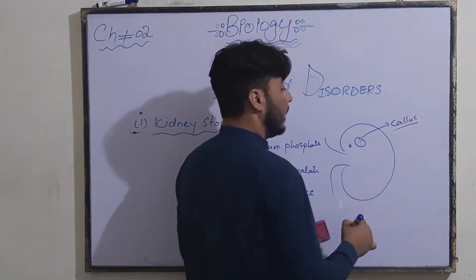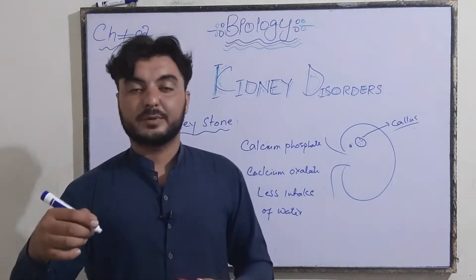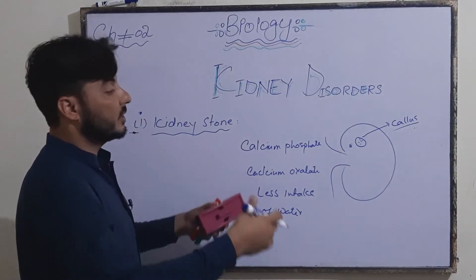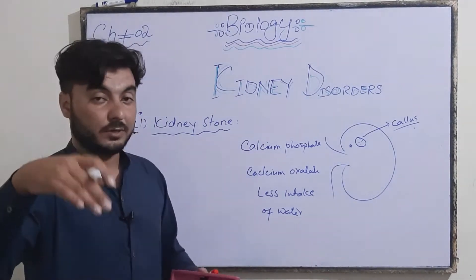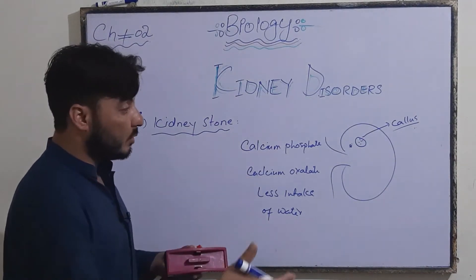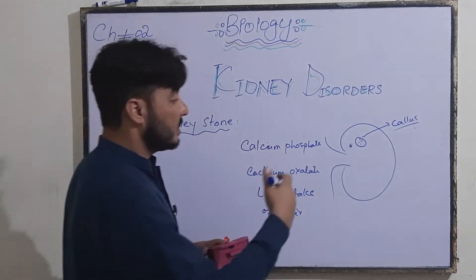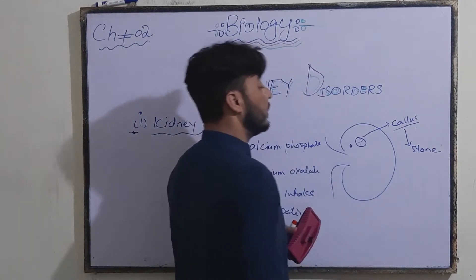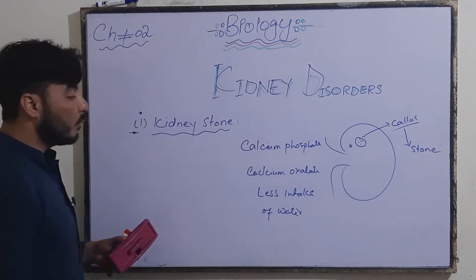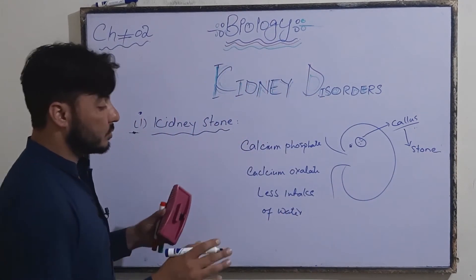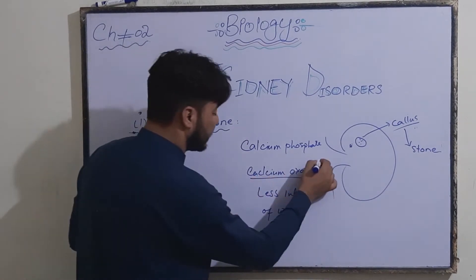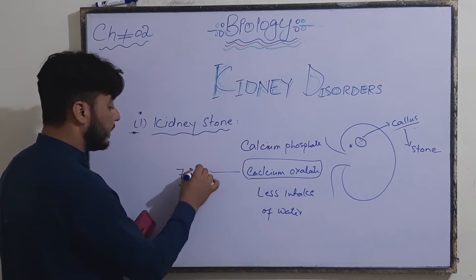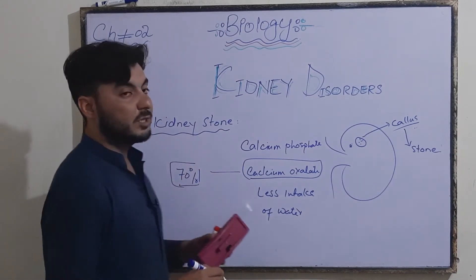Over time, the deposition of different material particles forms a calculus, and its shape increases gradually to form what we call a stone — kidney stones. In the majority of cases, kidney stones are caused by calcium oxalate; 70% of kidney stones are caused by calcium oxalate.